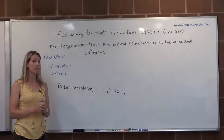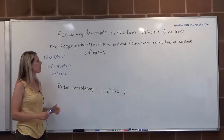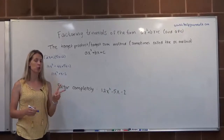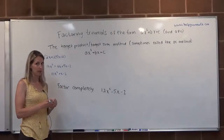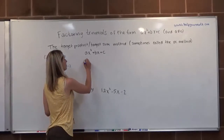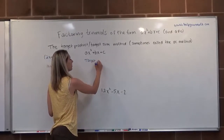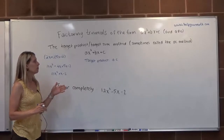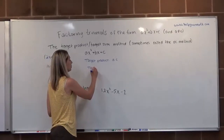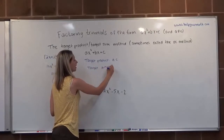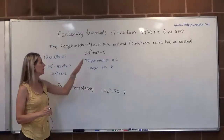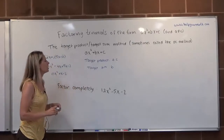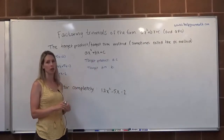This does require knowing factoring by grouping, so if you need to rewatch that video, do that now. For the target product target sum method, we try to find a combination of two numbers whose product equals A times C, and whose sum equals B. We're using the coefficients and constants, not the variables. So the target product is A times C, and the target sum is B.